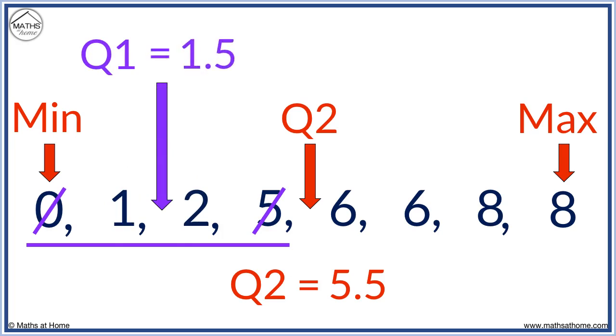To find Q3, we find the median of the numbers to the right of Q2. The median is between six and eight. Q3 equals seven.